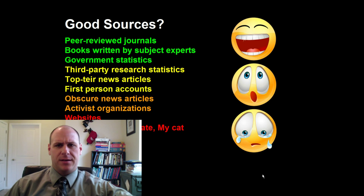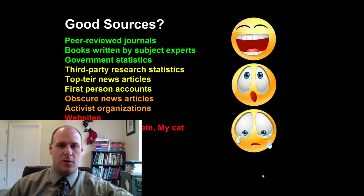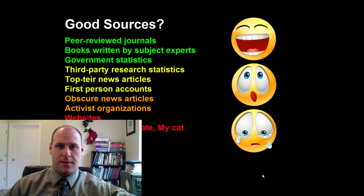From there, you start to drift into things like news and contextual sources. Higher up on the scale are top-tier news articles — articles that come from easily recognizable news sources like the New York Times and Wall Street Journal. From there, you start to drift to the fringes when you get into first-person accounts. For the most part, these can still be pretty good, particularly if you're talking about a current event or recent phenomena. It can be nice to have the context of someone who has lived through that. Just like with books written by subject experts, you need to establish the credibility of those first-person accounts — why is this person credible to talk on the subject?